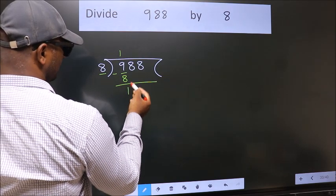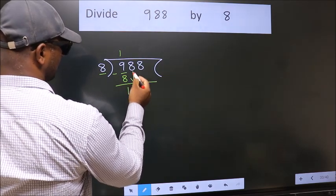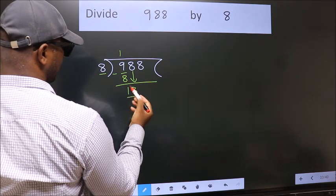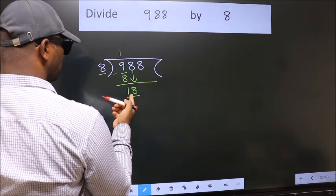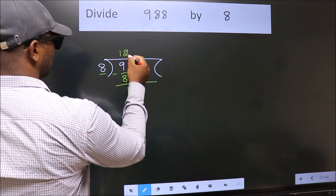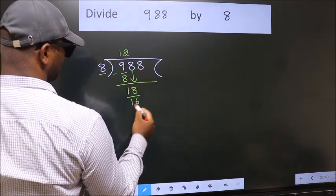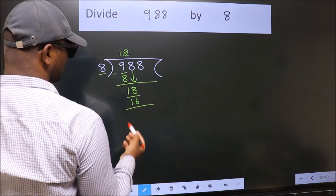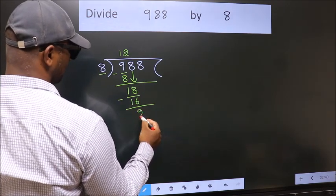After this, bring down the beside number. So 8 down. So 18. A number close to 18 in 8 table is 8 twos, 16. Now we subtract. We get 2.